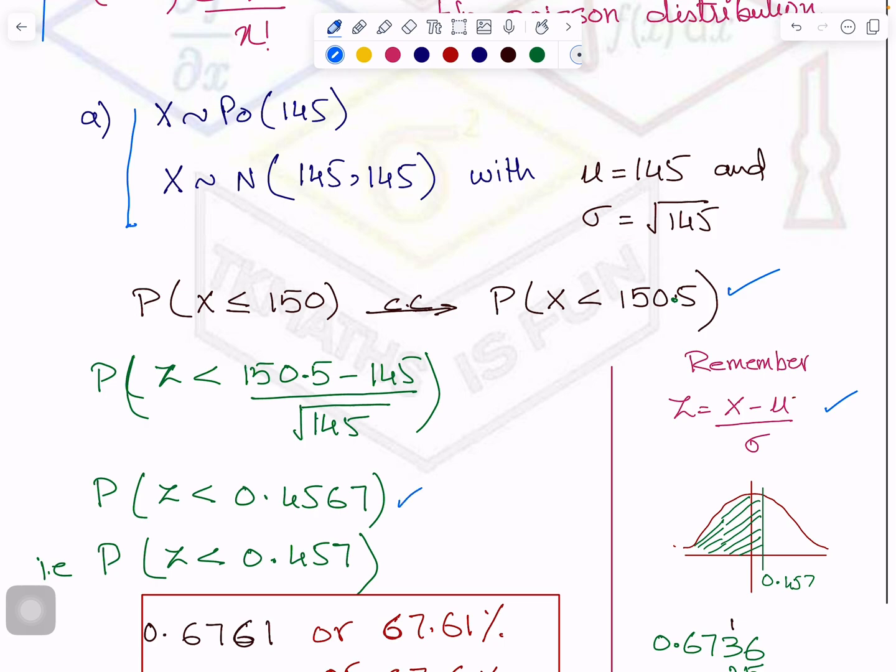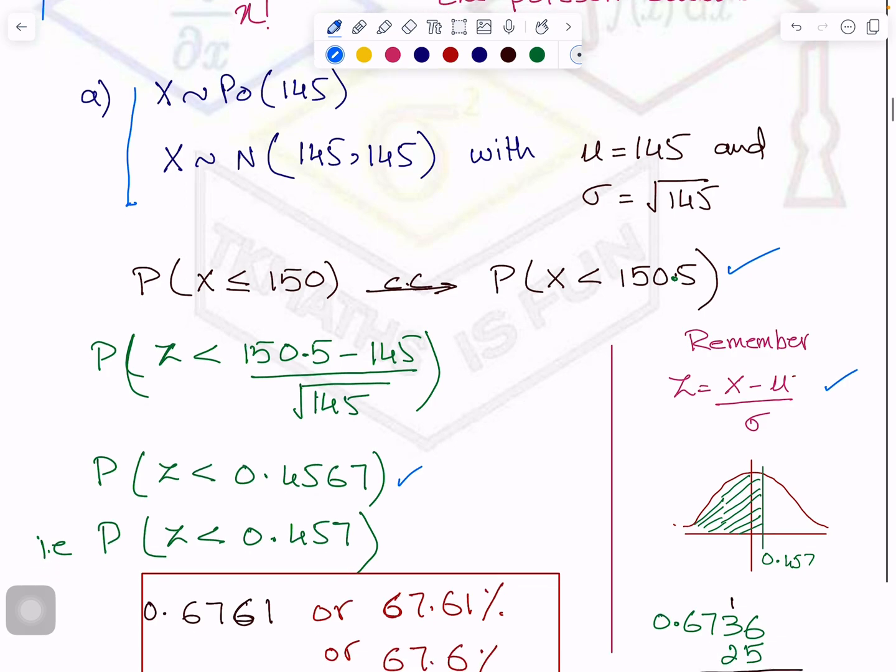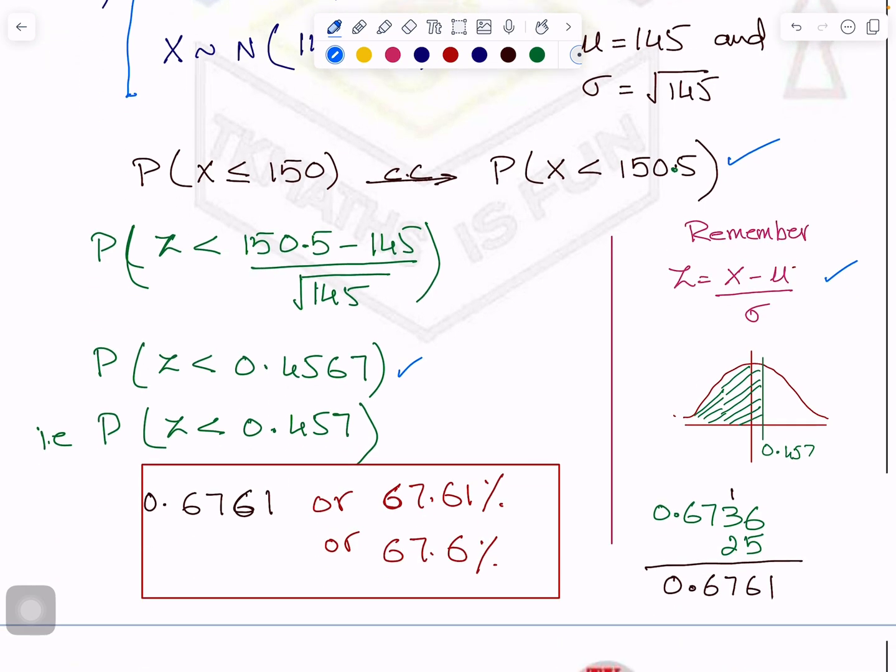You get the value of z less than 0.4567. You calculate the probability against it. I have shown you here in the sketch what it looks like. Your answer is 0.6761, which is 67.61 percentage. Usually, we give the answer in three significant figures as per the instruction on the first page.